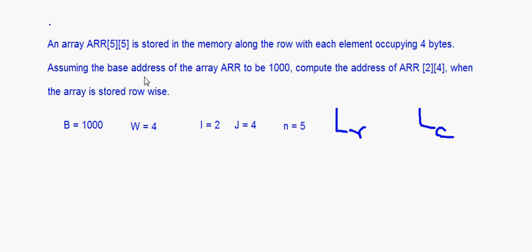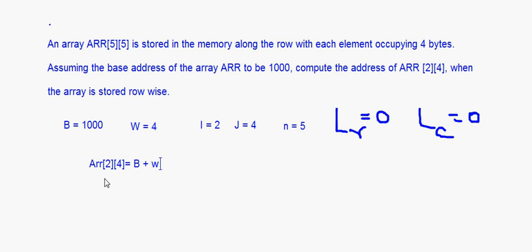When nothing is mentioned about where the index starts, it is a normal array where subscripting starts from 0. So the lower bound of the rows LR is 0 and the lower bound of the columns LC is also 0. Using these values, we apply the formula: Address of arr[2][4] = B + W * (N * (i - LR) + (j - LC)).